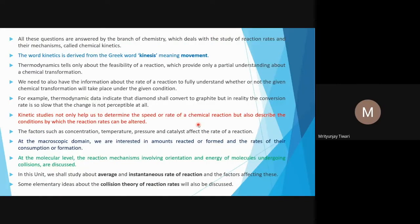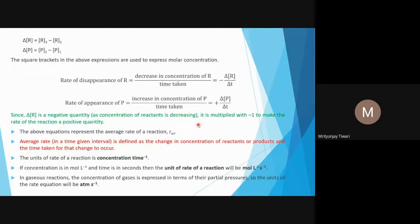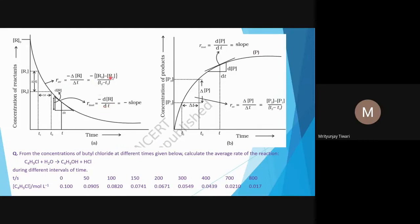I also explained and defined the rate of disappearance of a reactant, rate of reaction, and rate of appearance of a product. We also saw the average rate, defined as the change in concentration of reactant divided by the time interval. And then we talked about the instantaneous rate — the rate at a particular instant.